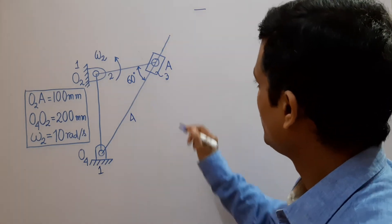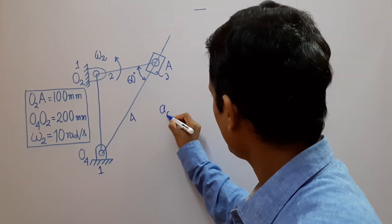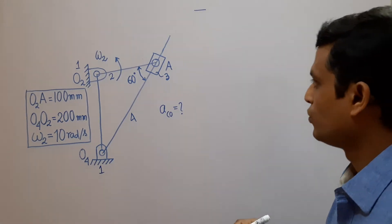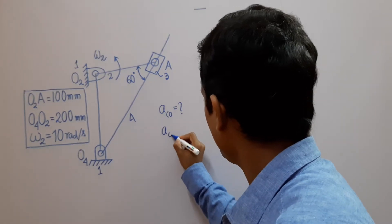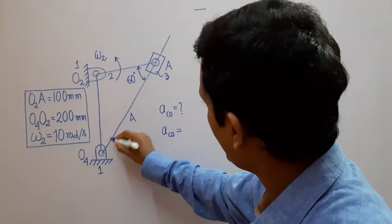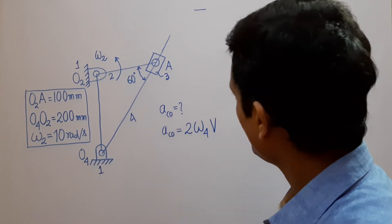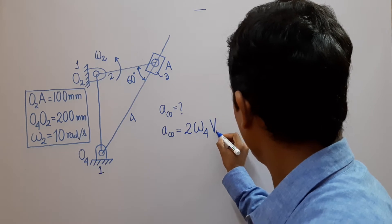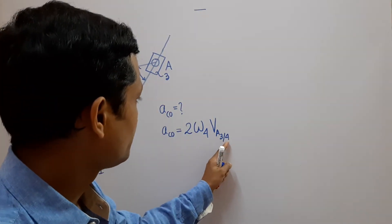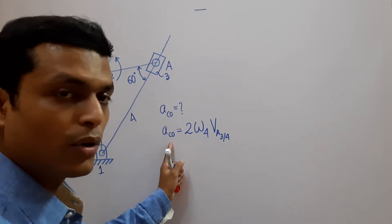We have to determine the Coriolis component of link 3 at point A. The Coriolis component of acceleration of link 3 at point A will be 2 times the angular velocity of link 4 times the sliding velocity of link 3 with respect to link 4 at point A. This is the equation for the Coriolis component of acceleration.